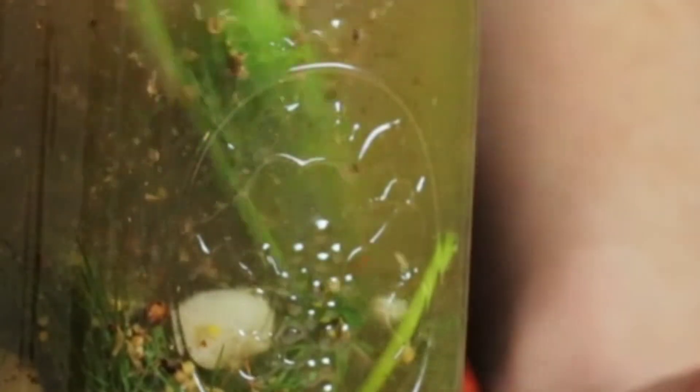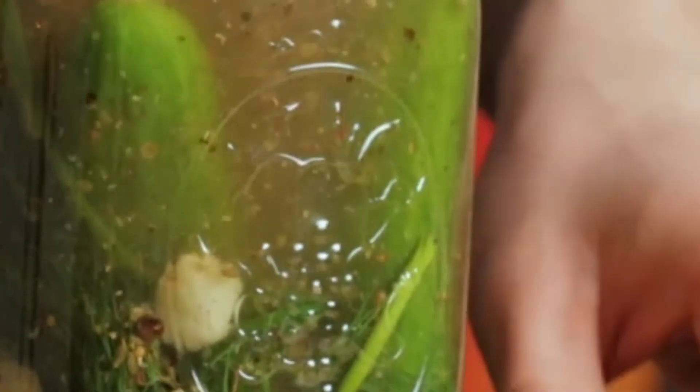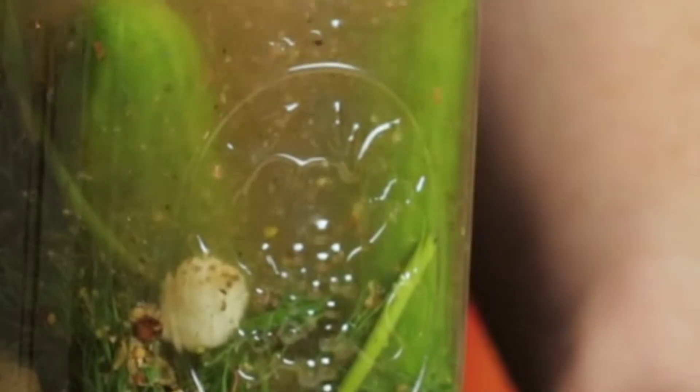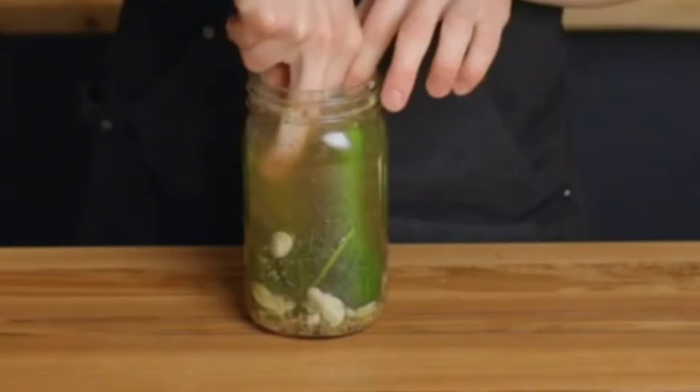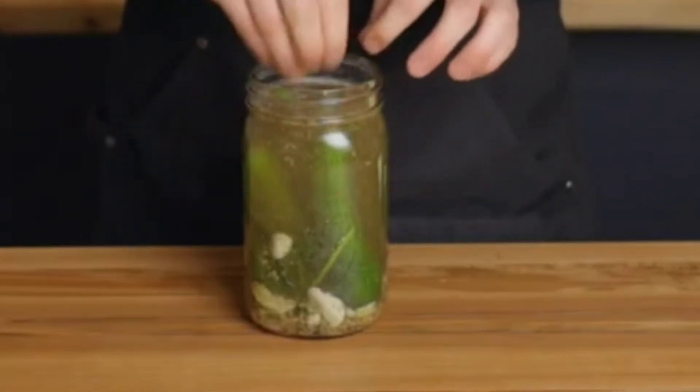You can either cut the cucumbers in slices if you like. I'm using whole cucumbers because I use spices in it. If you're using sliced cucumbers, you shouldn't add too much spice otherwise it's going to be really spicy.